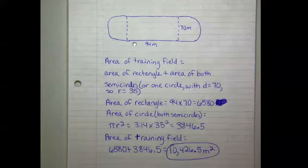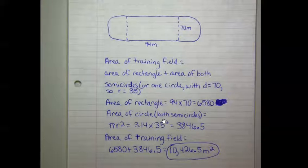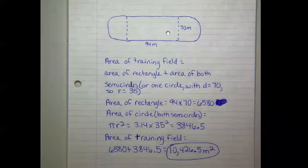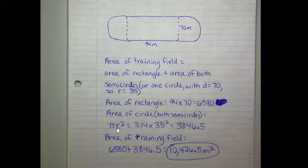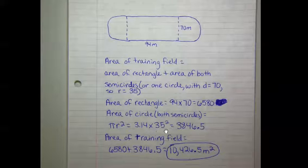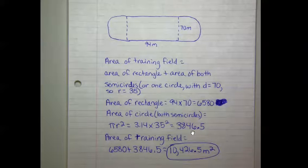The area of the rectangle is 94 times 70, which equals 6580 meters squared. The area of the circle (the two halves put together gives us one circle) is πr². We already found r to be 35, so plugging in the numbers: 3.14 times 35 squared equals 3846.5 meters squared.